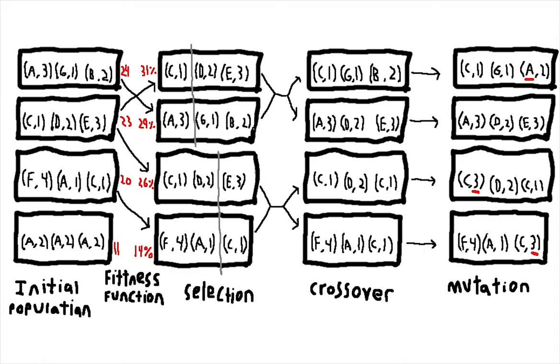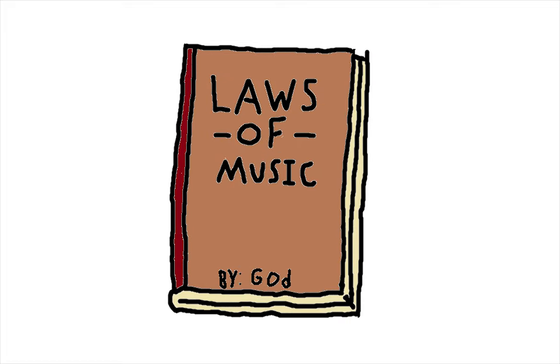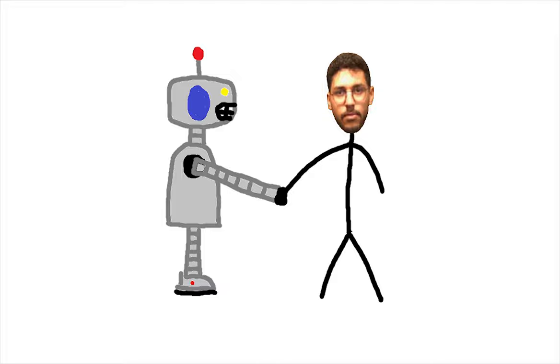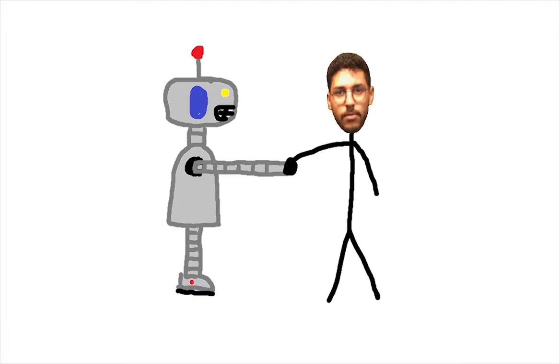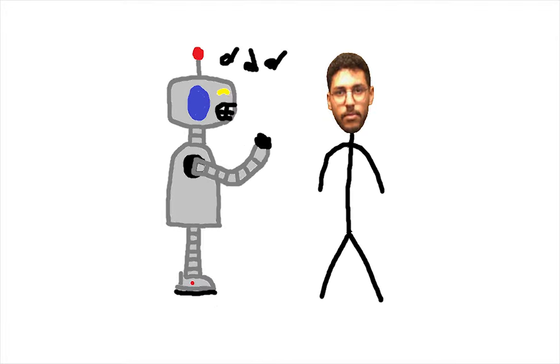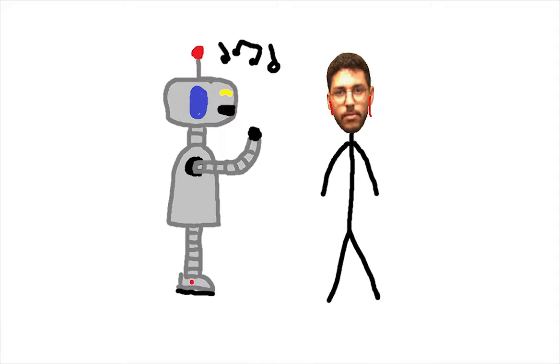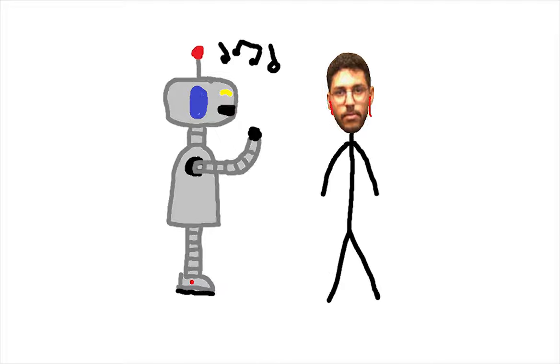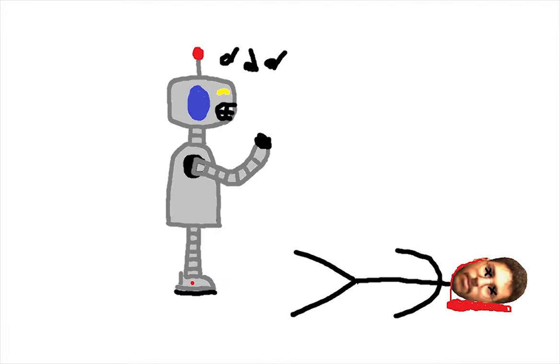The problem with this method is that music is subjective so creating an objective and benevolent fitness function is impossible. The most obvious solution to this is to use a hybrid approach where each individual in a generation would be listened to and evaluated by a human auteur. However, I'm sure you could imagine manually listening to hundreds or thousands of these songs every generation would get tiresome very quickly.